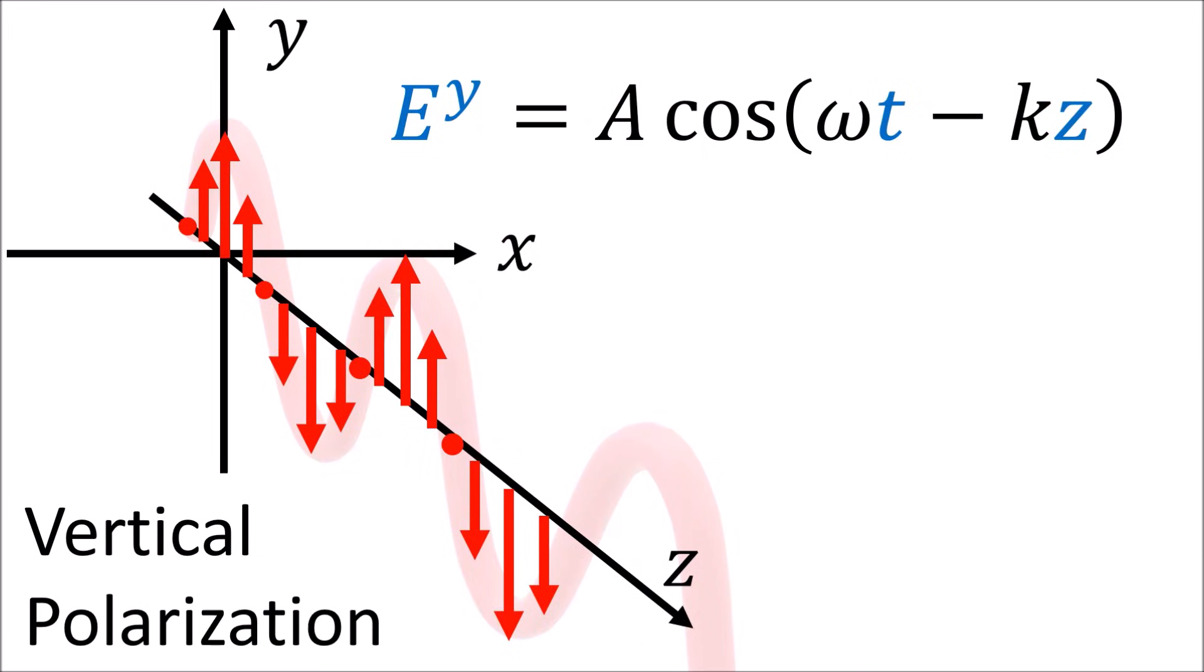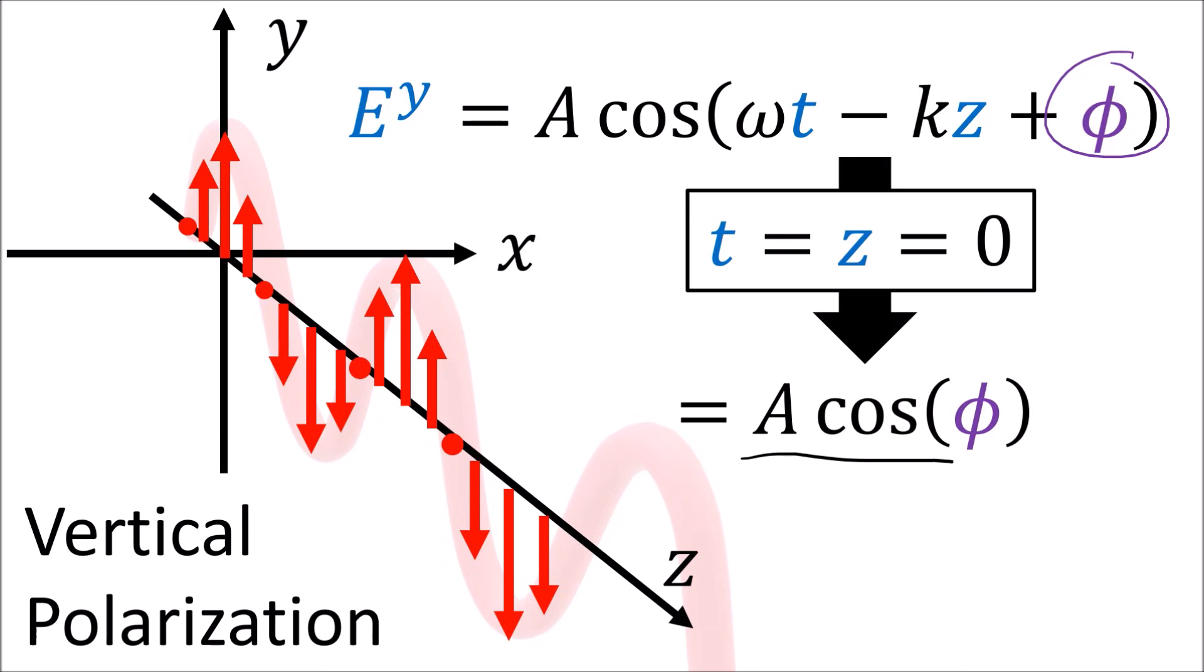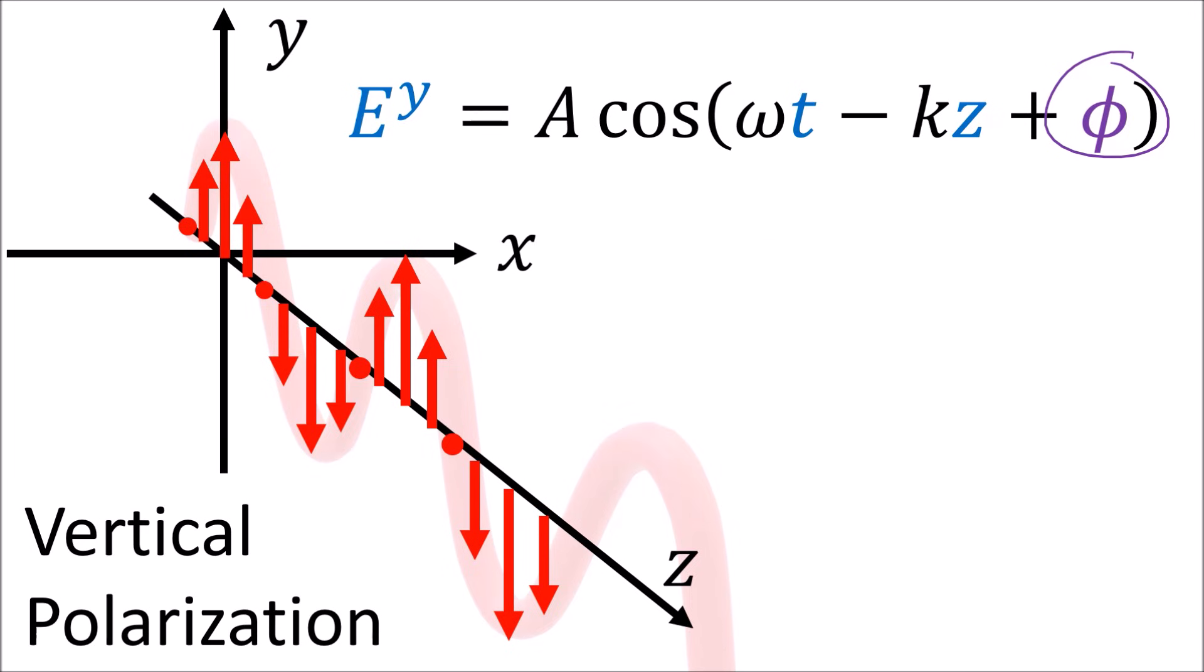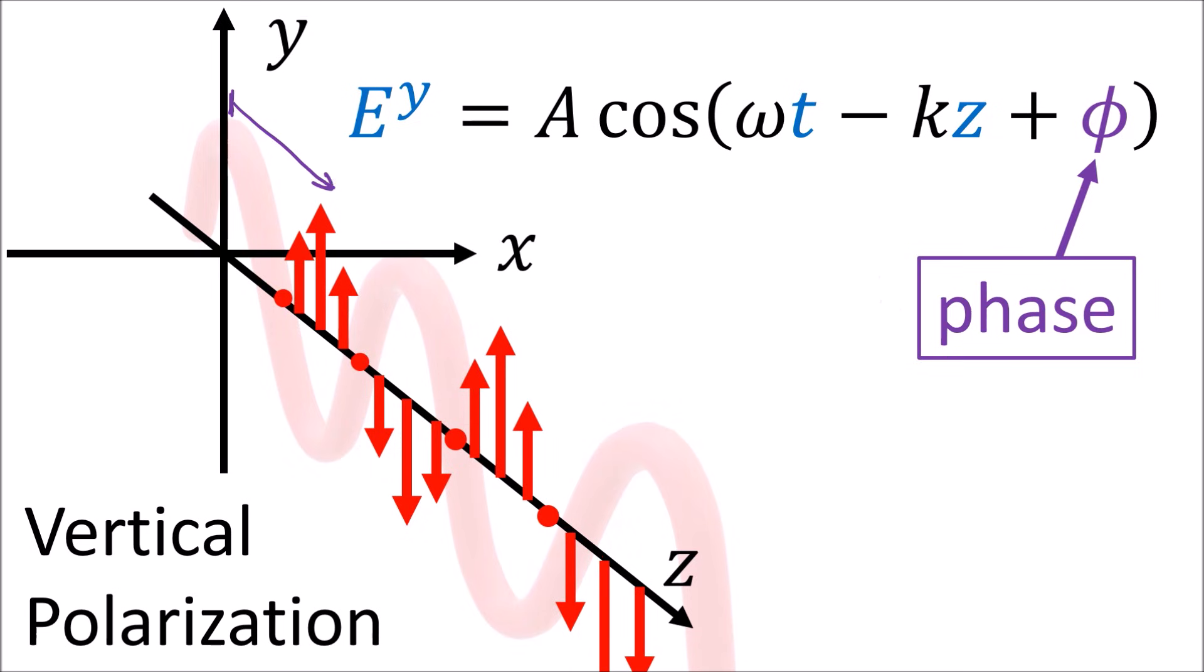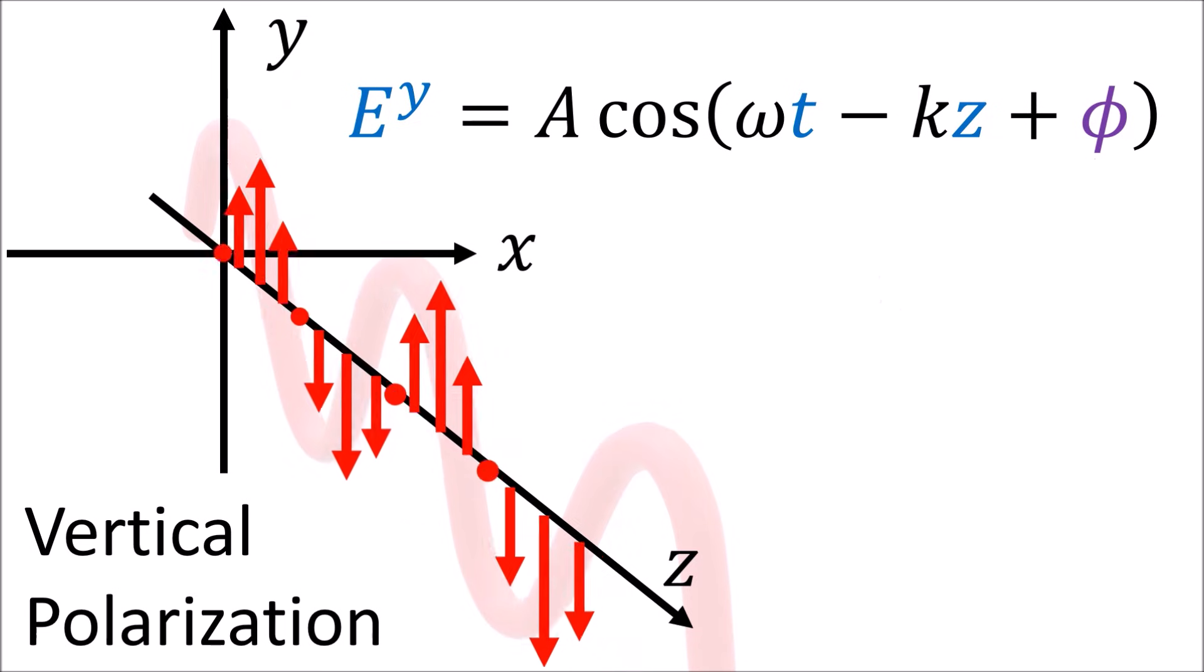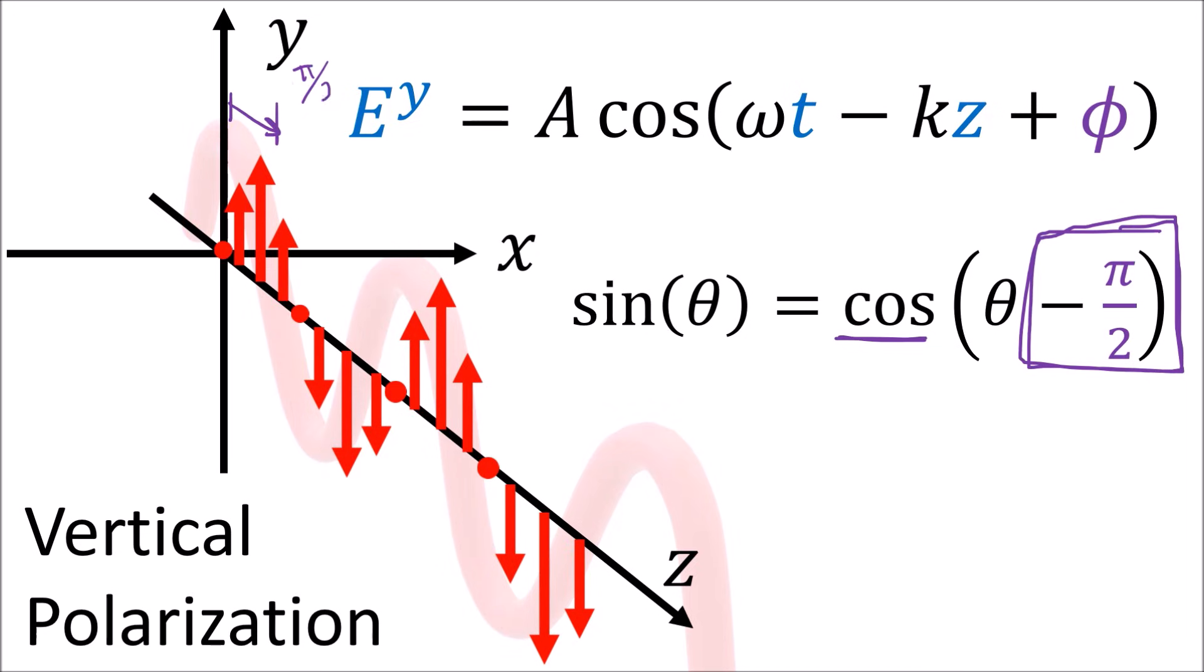One thing we can do to modify our traveling wave is to add an extra phi value inside the sinusoid function. You can think of this as indicating the wave's starting value at the origin z equals zero when time t equals zero. This starting value is called a phase, and changing the phase value will shift the wave back and forth along the axis of travel. Applying a phase shift of negative pi over 2 to a cosine will shift the wave ahead a quarter cycle, which is equivalent to a sine wave.